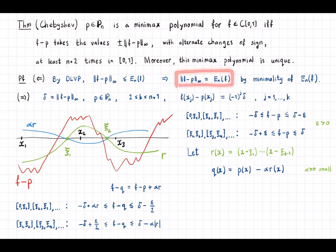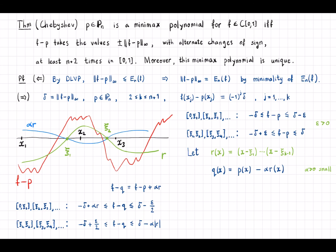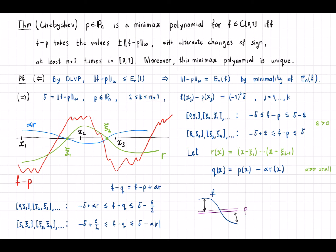Now in the other direction, let's call this error delta. We want to prove that if p is a minimax polynomial then f minus p takes the extreme values ±delta at least n plus two times with alternating signs. Suppose it only takes those values k times, where k is less than n plus two and at least two — we know k must be at least two because a minimax polynomial must oscillate at least once. Assume k is strictly smaller than n plus two.